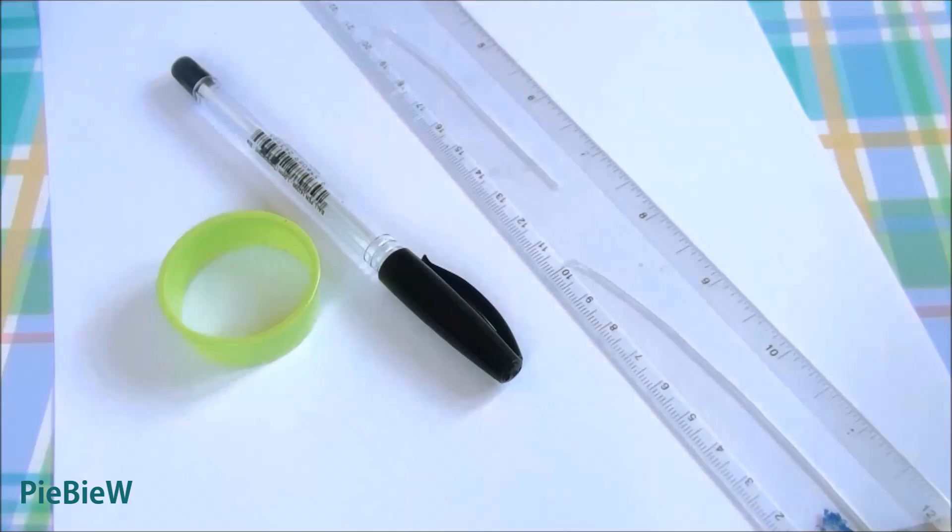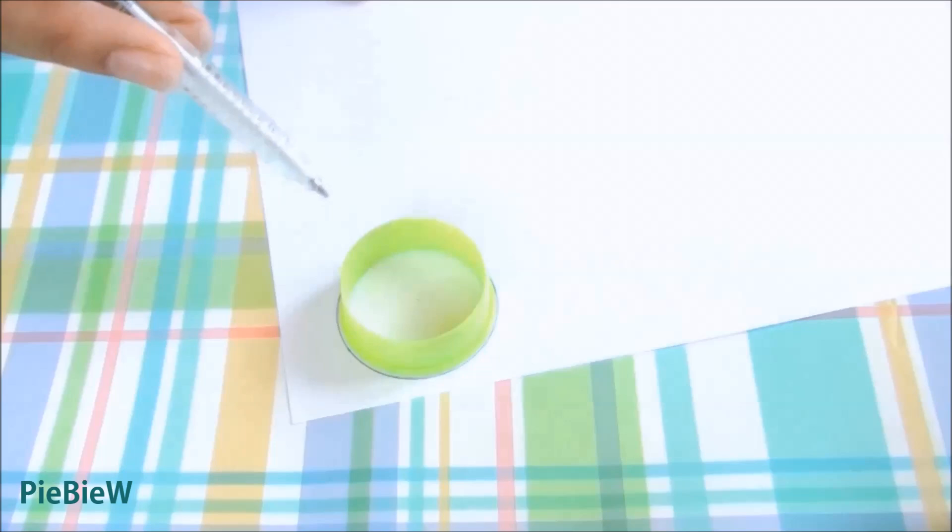So you're going to trace around this circle cookie cutter and using a ruler you're going to draw in the shape of the fan.